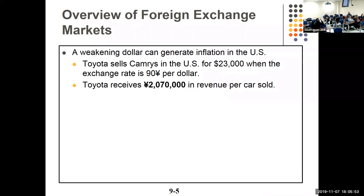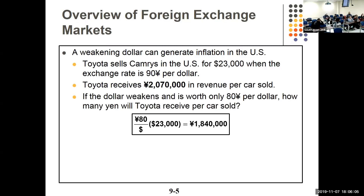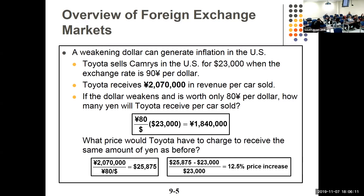Here's an example on Toyota. They sell cameras for $23,000 when the exchange rate is 90 yen to the dollar, so they get 2,070,000 yen. If the dollar weakens to only 80 yen, they'll only get 1.8 million yen. So to get the same amount they have to raise the price by the difference in the exchange rate — 12.5% — making the price $25,875 if they want to get the same yen out of it.